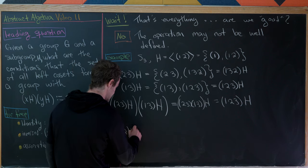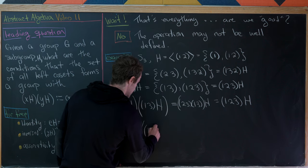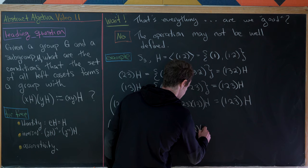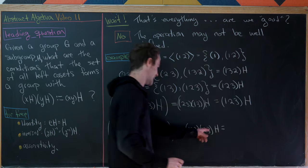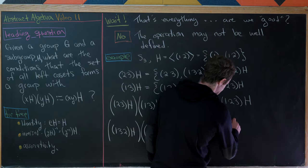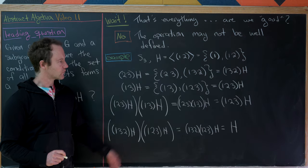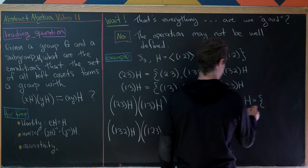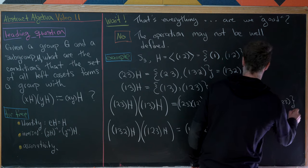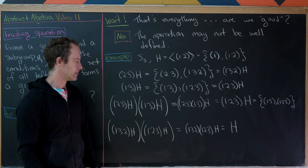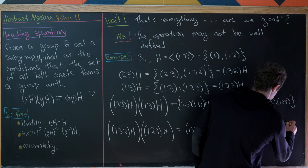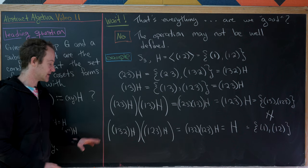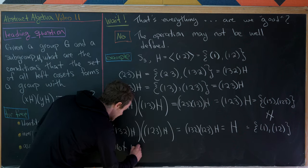But now let's use the other representatives: (1 3 2)H times (1 2 3)H. By our operation that's (1 3 2)(1 2 3)H. But (1 3 2) and (1 2 3) are inverses of each other, so their product is the identity, giving us the identity times H, which is just H. Writing these out as sets: the first result is {(1 3), (1 2 3)} from our earlier calculation, but H is the set {1, (1 2)} from our original setup. These are clearly not the same set, so this operation is not well-defined.